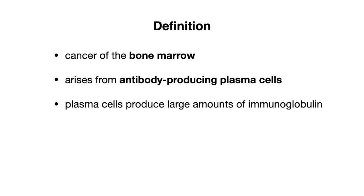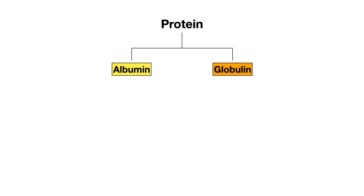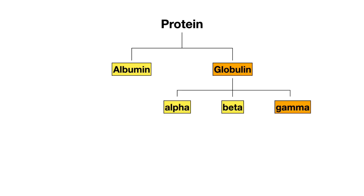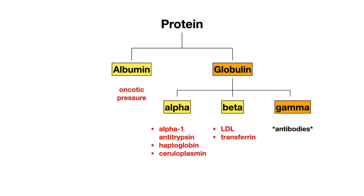To get a better understanding of what an immunoglobulin actually is, we need to understand the different types of protein found in the body, beginning with albumin and globulin. Globulin can be further broken down into alpha, beta, and gamma globulins. Gamma globulin is what we're referring to when we talk about immunoglobulins. Just keep in mind that albumin is responsible more for oncotic pressure in the body.